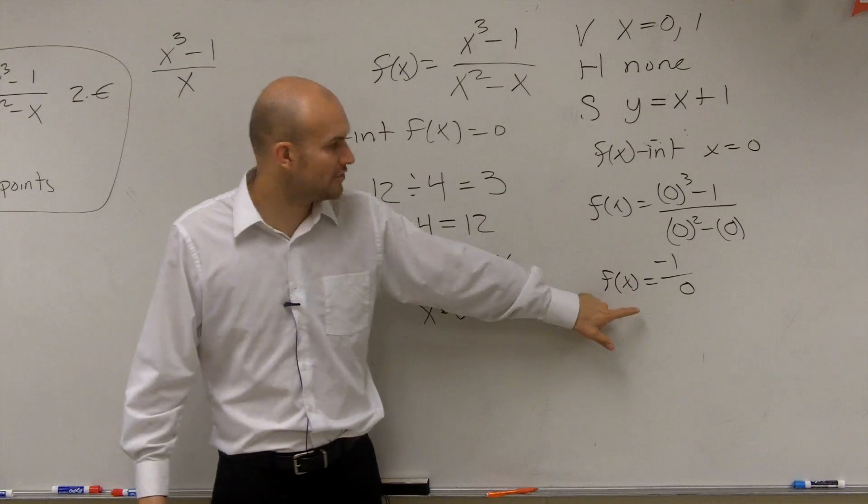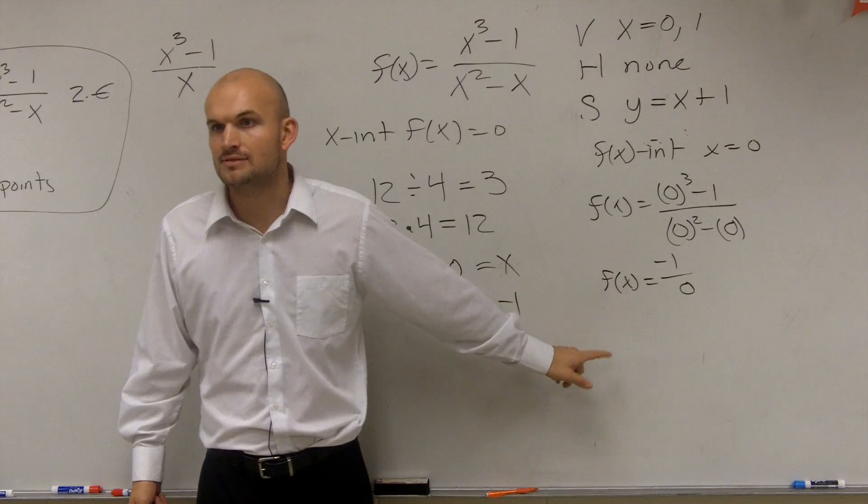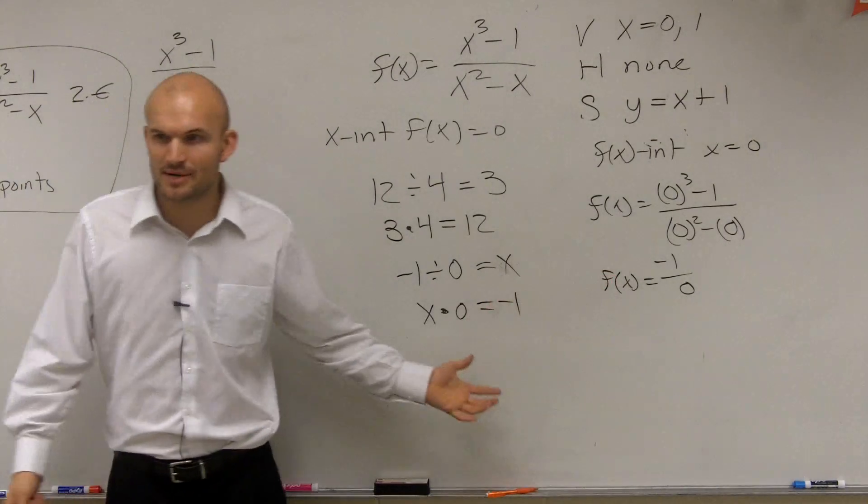So the answer for this is, there is no f of x intercept. It's undefined. Does that make sense? Why you can't divide by 0?